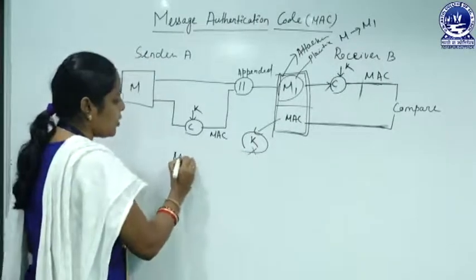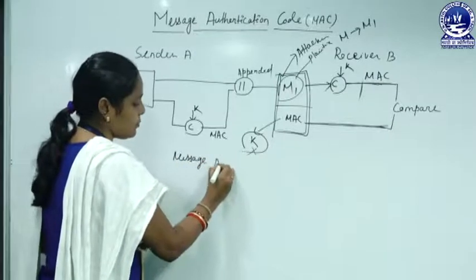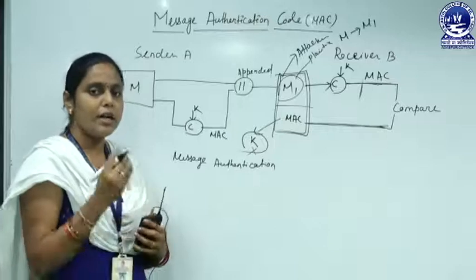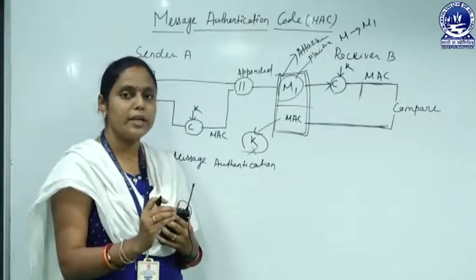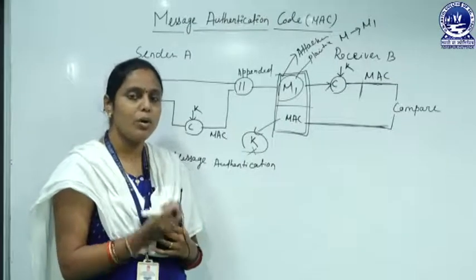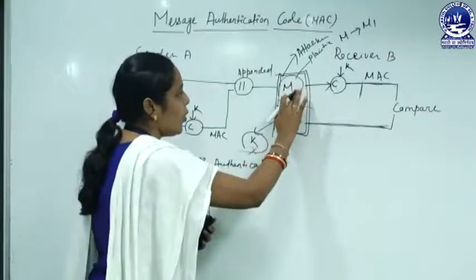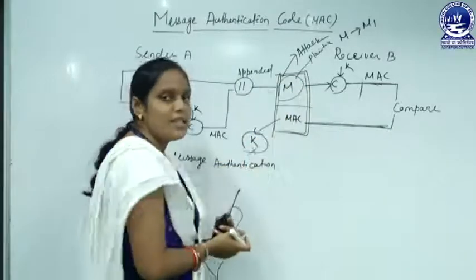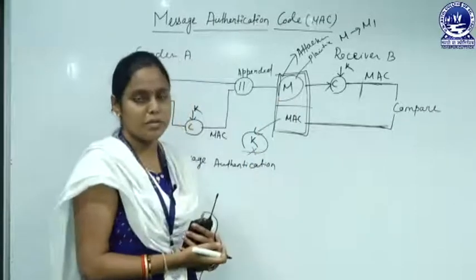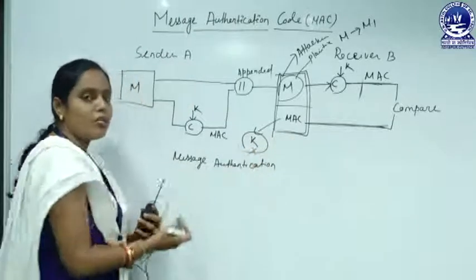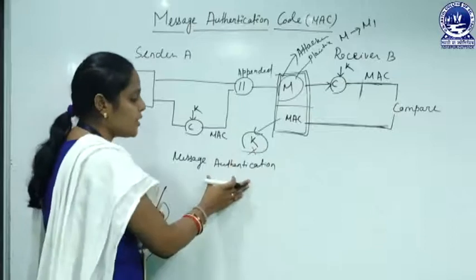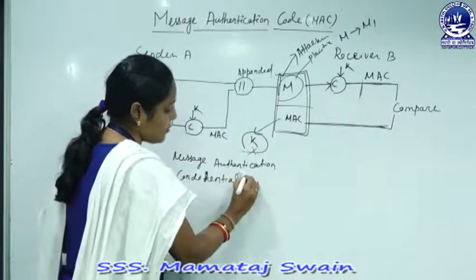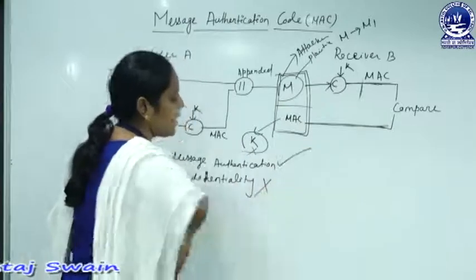So in this first case, message authentication is satisfied. However, confidentiality is not satisfied, because the message M is transmitted over the network as plain text with no encryption algorithm applied. An attacker can easily read the message. So in Case 1: authentication satisfied, confidentiality not satisfied.